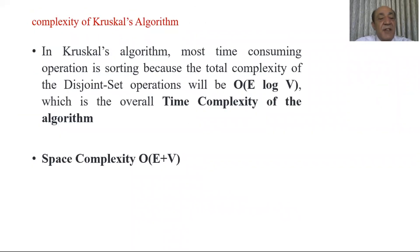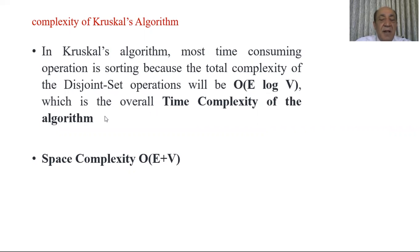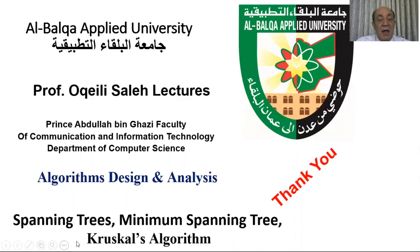Regarding the complexity of Kruskal's algorithm, the most time-consuming operation is sorting. The total complexity of the disjoint sets operations is O(E log E), and this is the overall time complexity of the algorithm. Space complexity is O(V). In the next meeting I will explain Prim's algorithm for finding the minimum spanning tree. Thank you.